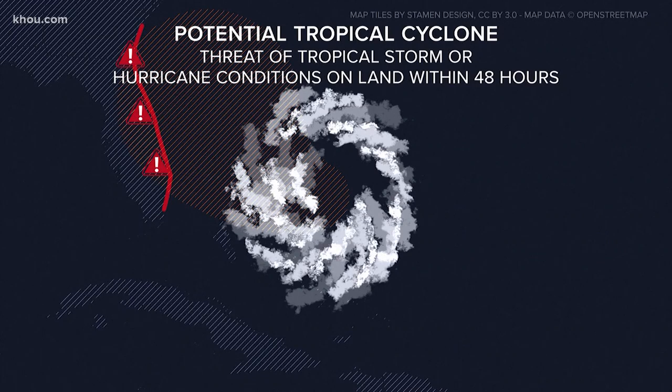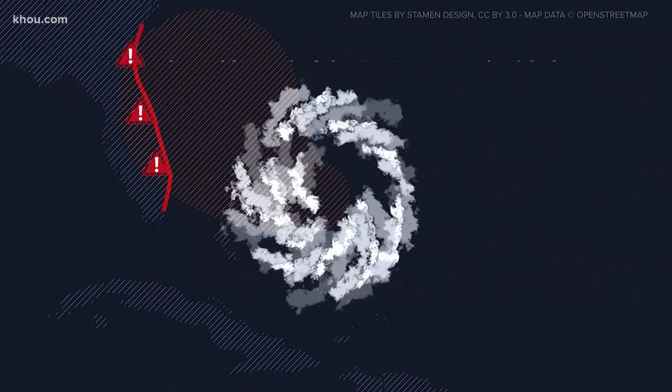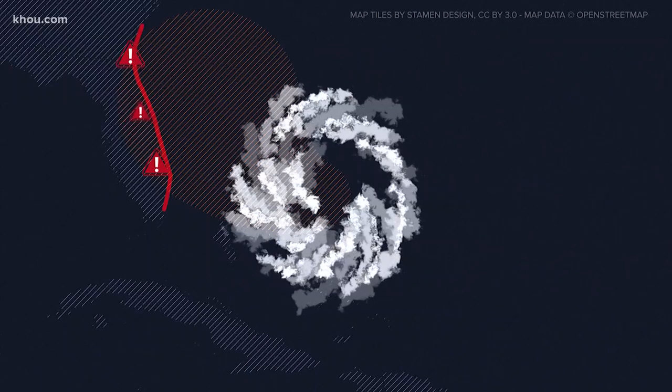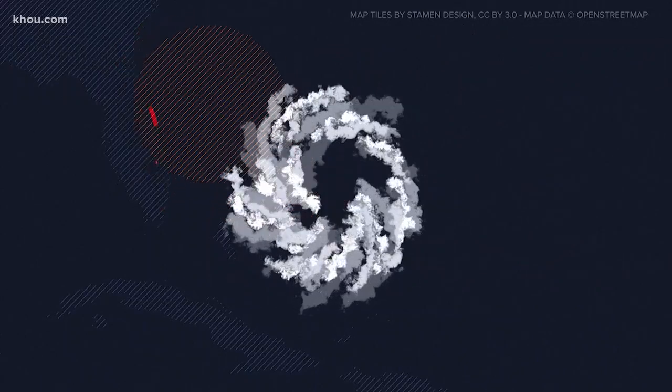When the National Hurricane Center identifies a potential tropical cyclone, tropical watches and warnings can be issued, as well as all National Hurricane Center advisories and forecast track graphics. From there, you're likely more familiar with the terms.